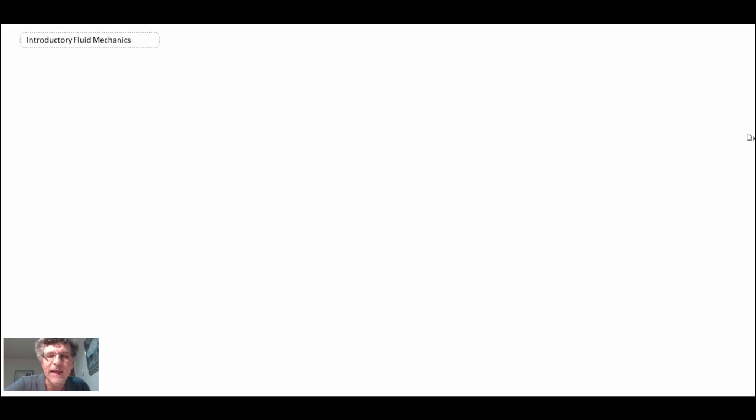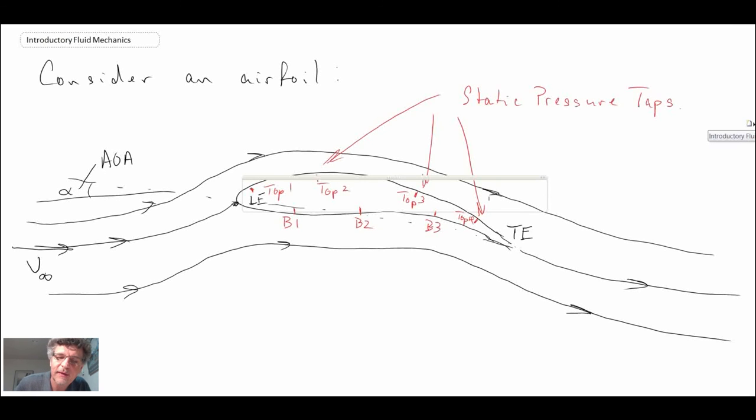Near the back of the airfoil, we start losing the effect of Bernoulli's because we have separation. That's why in the earlier clip, the pressures near the trailing edge were not changing that much. The only place where we saw a significant change was on the leading edge, because there the flow remains attached and Bernoulli's equation applies. Further downstream where you get separated flow, you can no longer effectively apply Bernoulli's equation.